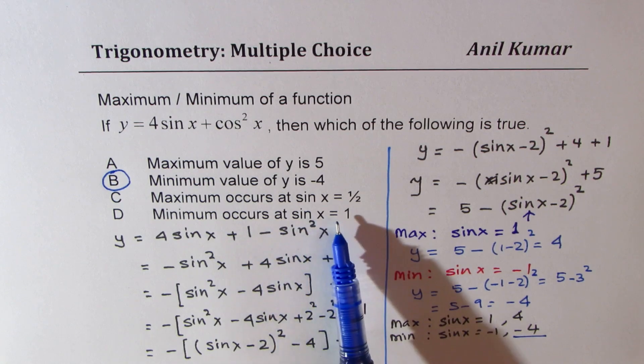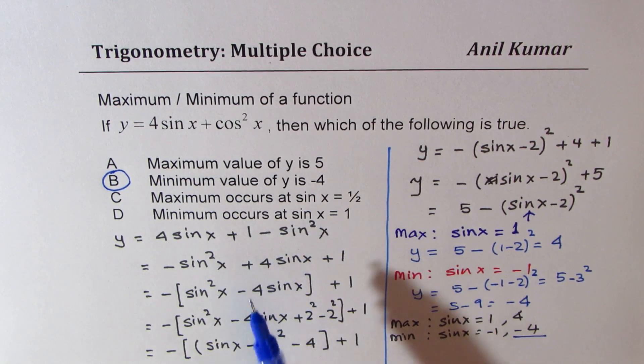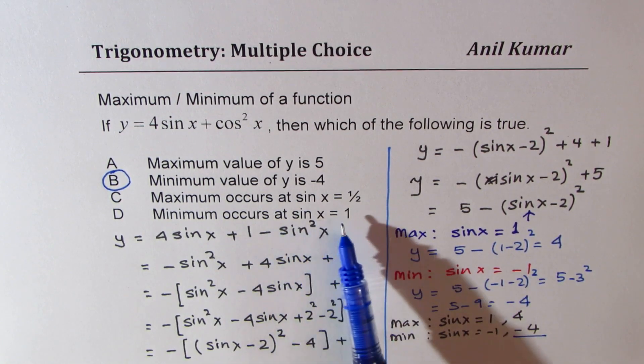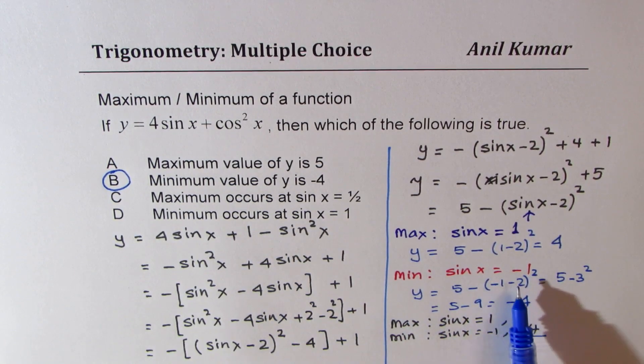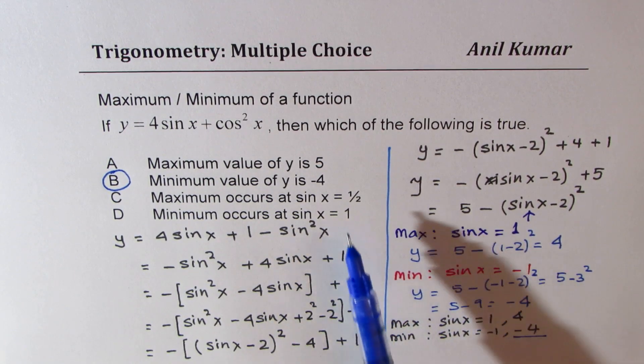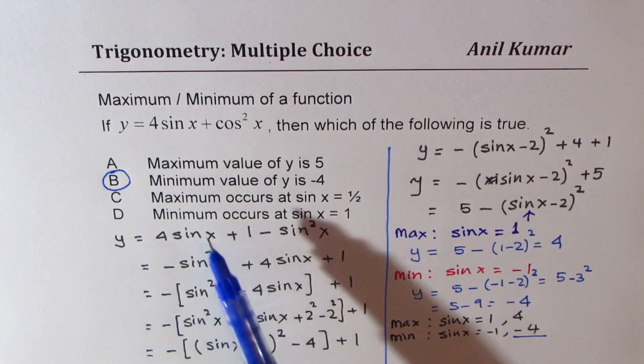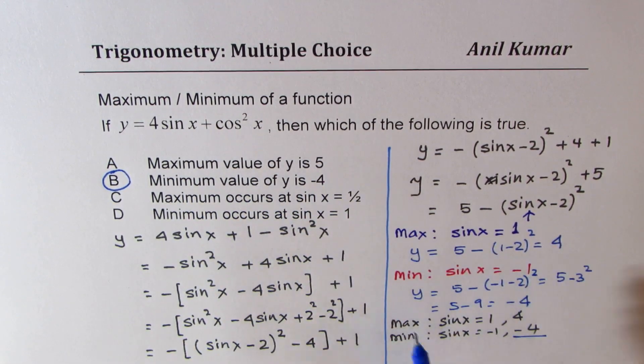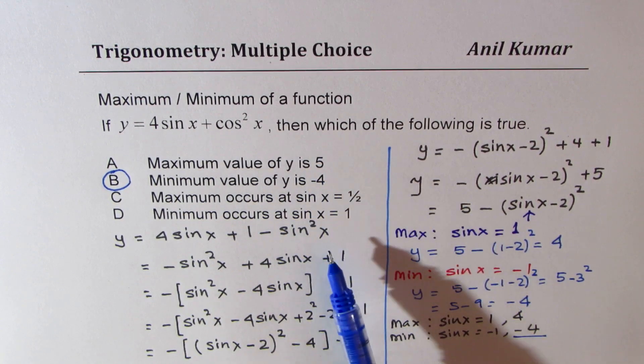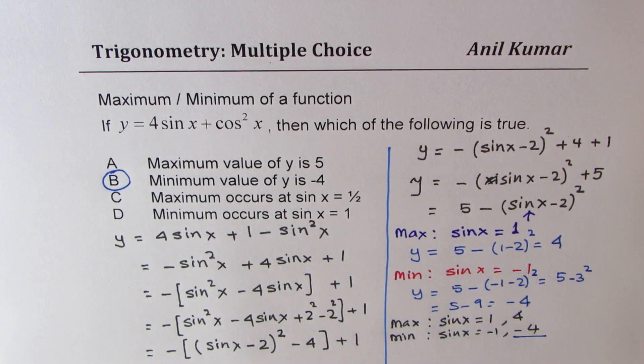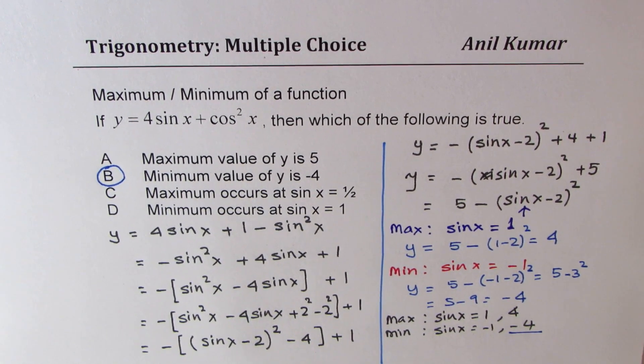So minimum occurs at x equals to 1 is wrong. At sin x is equals to minus 1, then the minimum is occurring. And that is why that is wrong. And the maximum value is not 5 but 4. So I could have changed this question to match any of these results which we have got. So I hope that is the idea.